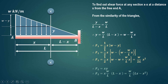Now we consider the bottom part, which is the uniformly distributed load — a rectangular distribution of width X and height Y. The area of this rectangle is X into Y. Substituting Y equals W/L into (L minus X), we get F2 equals W/L times (LX minus X squared).